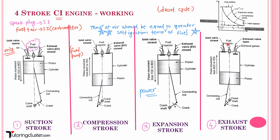To conclude, let me remind you of the differences between SI and CI engines. The SI engine works on the Otto cycle, while the CI engine works on the diesel cycle.